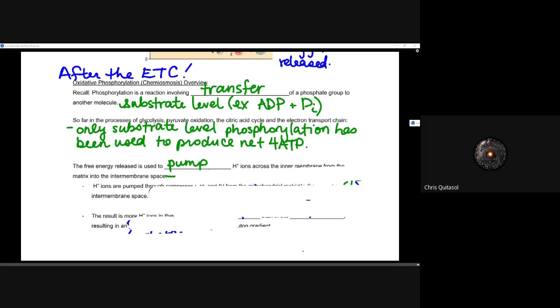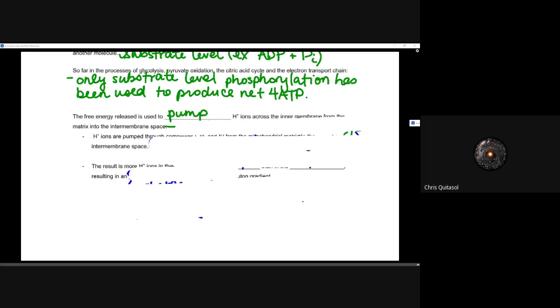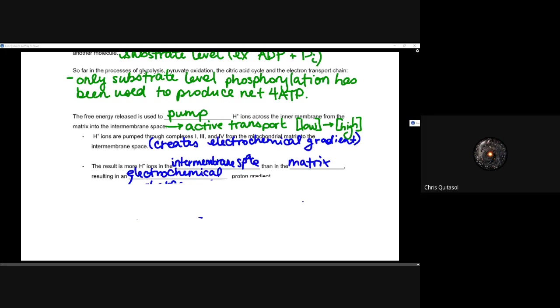So the free energy released is used to pump hydrogen ions across that inner membrane from the matrix into that intermembrane space. It's active transport because we're moving things from low to high concentration. Those hydrogen ions that are pumped through those complexes one, three, and four, we're looking at creating that electrochemical gradient. Again, I alluded to that stuff earlier, and once we create that electrochemical gradient, we can now take a look at how we can utilize that to produce more ATP.